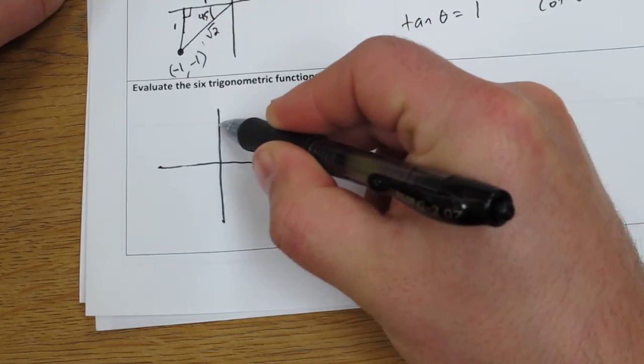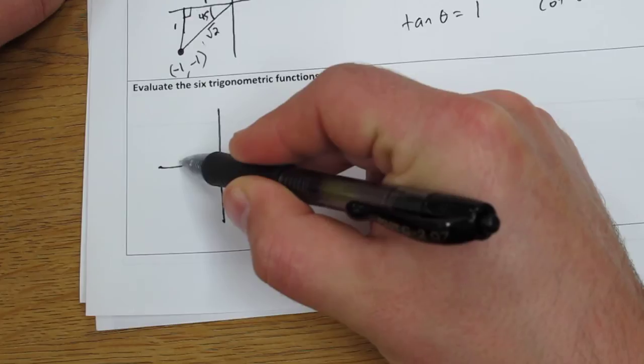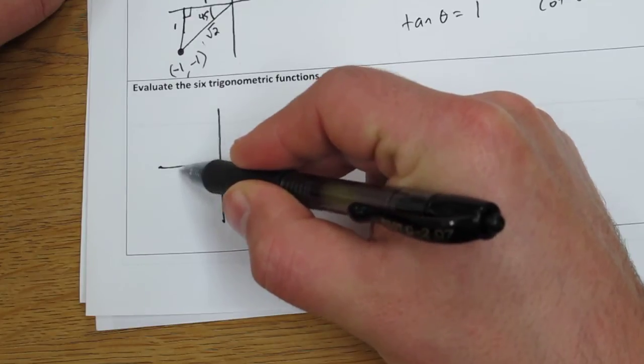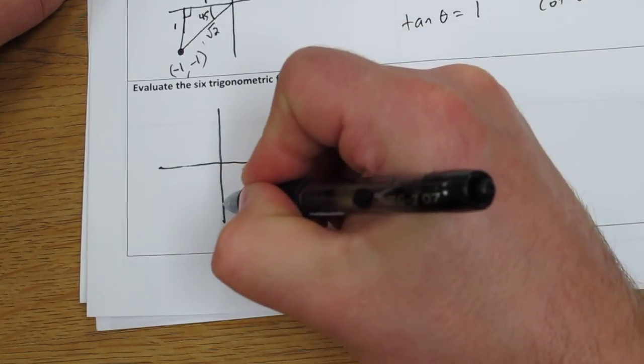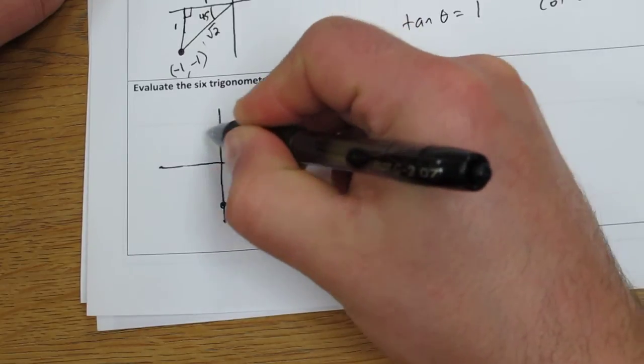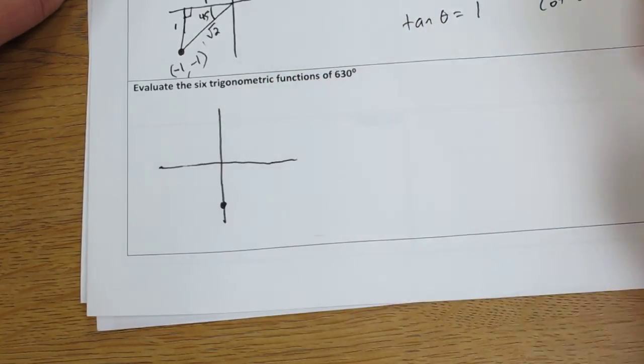That's 450, which is another 90 degrees. 90 more degrees is 540, and 90 more degrees would be 630. So we'd rotate all the way around and end up right here.